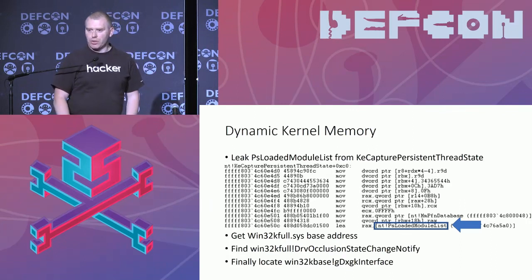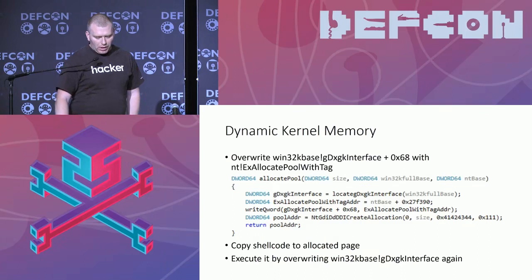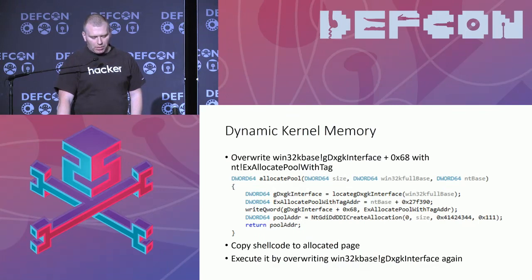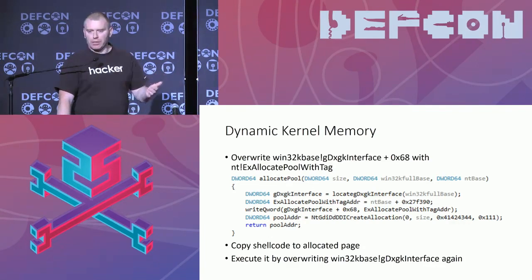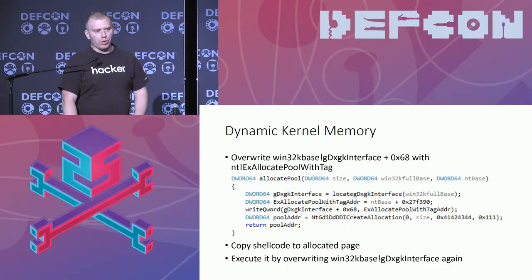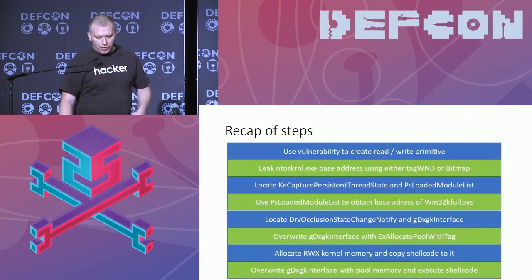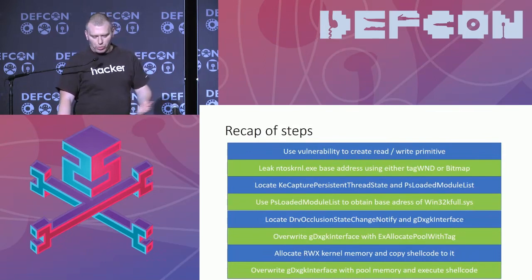Luckily all of this takes less than a second when running, so it's not a problem. Once we have that, we simply overwrite offset 0x68 with ExAllocatePoolWithTag and then call it, allocating pool memory. It returns our allocated pool memory, then we use our write primitive to copy the shellcode into it, and execute it by overwriting the function table with the allocated pool memory address. This is almost like the days of Windows 7 — allocate executable pool memory and execute it. It has a few more steps so it's not more efficient, but it's a different way. So if one method gets fixed and doesn't work, we can use another one.